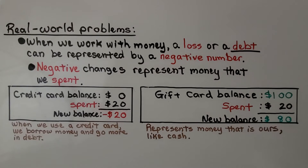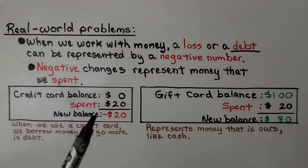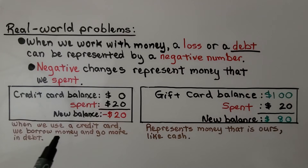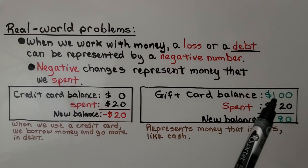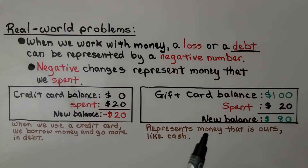Now we're going to discuss real-world problems with debts, money, and credit cards. When we work with money, a loss or a debt can be represented by a negative number — negative changes represent money that we spent. Here's a credit card balance that starts at 0. It's completely paid off, but then they spent $20, so their new balance is negative $20, meaning they owe $20 to the credit card company. For a gift card that had $100 and they spent $20, the new balance is a positive $80 — that represents money that is ours. For a credit card, it's money we owe because we're borrowing it.